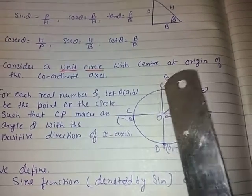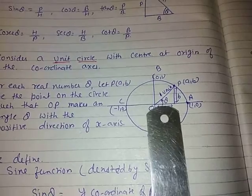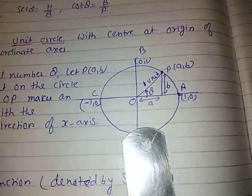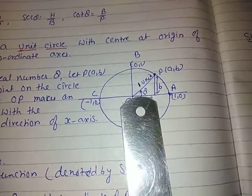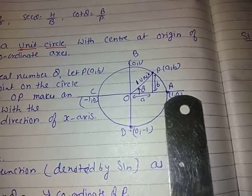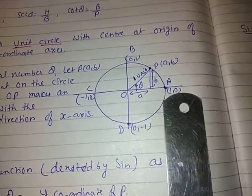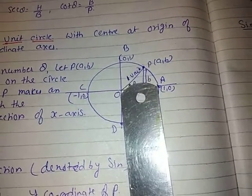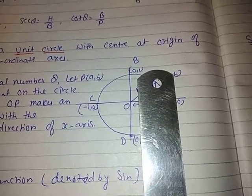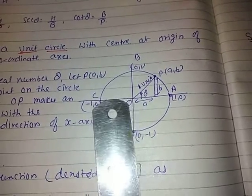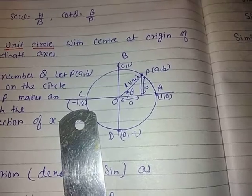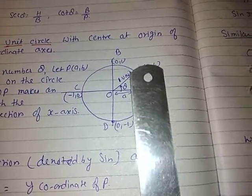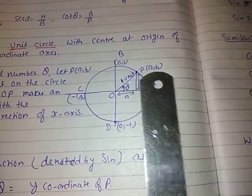Now we are going to study trigonometric functions using a unit circle. Consider a unit circle with center at the origin of the coordinate axis — a circle whose radius is 1 unit. There are four key coordinates: point A is (1, 0), point B is (0, 1), point C is (−1, 0), and point D is (0, −1). Consider a point P lying on the circumference of the circle, and let this point be (a, b).